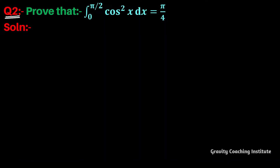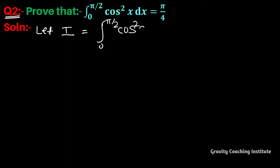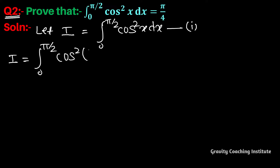Question number 2: prove that the integral from 0 to π/2 of cos²x dx equals π/4. Let I equal the integral from 0 to π/2 of cos²x dx — suppose this is equation first. This equals the integral from 0 to π/2 of cos²(π/2 − x) dx.